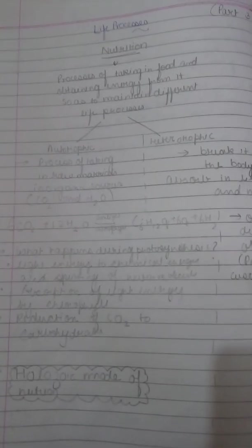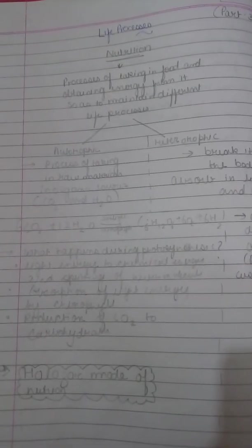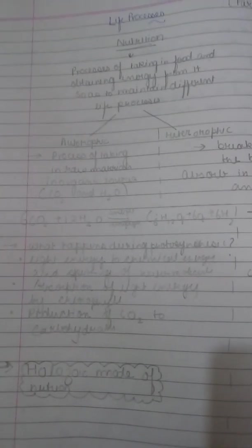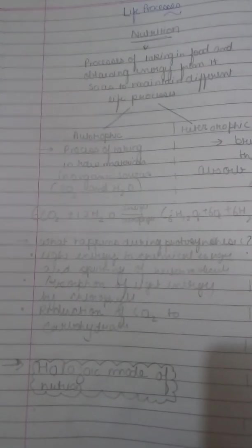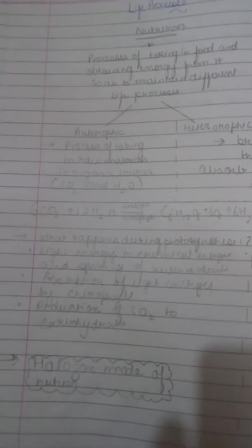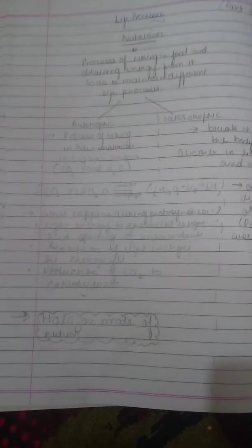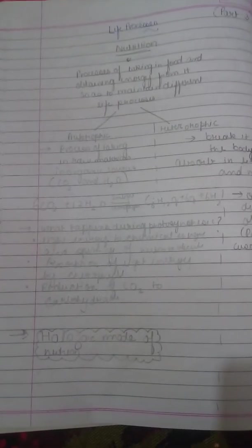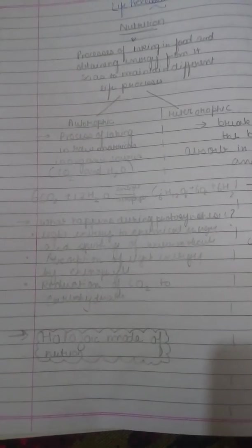Then the question can also be: explain the autotrophic mode of nutrition in green plants. Green plants take in sunlight and water from their roots. You need to specify that they are taking in the raw materials and mention from where. In the presence of those raw materials, they make carbohydrates which help generate oxygen. This equation is very important. What happens during photosynthesis? Light energy is converted into chemical energy, splitting of water molecule, absorption of light energy by chlorophyll, and reduction of carbon dioxide to carbohydrates.